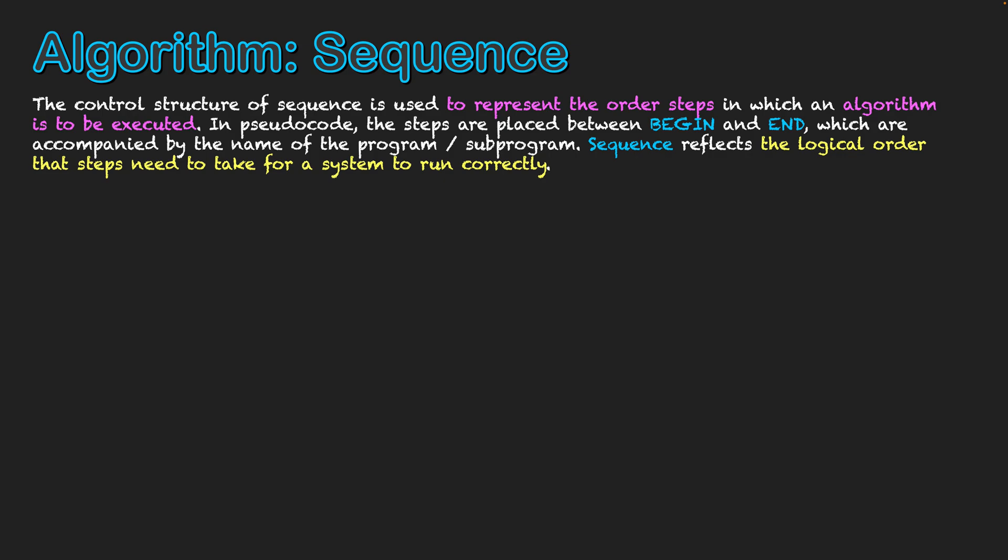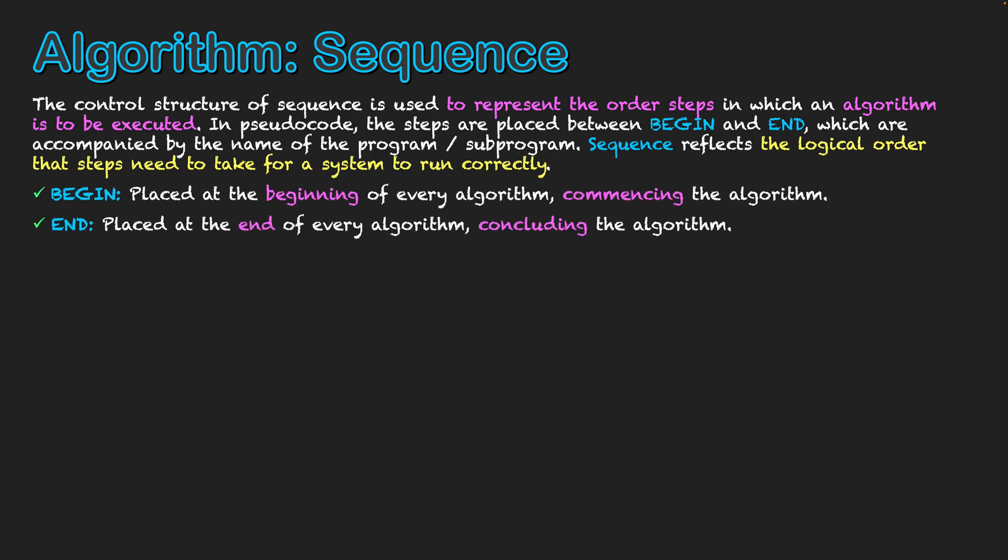In relation to keywords, there are two specific keywords: BEGIN, which is placed at the beginning of every algorithm and commences the algorithm, and END, which is placed at the end of every algorithm and concludes it.